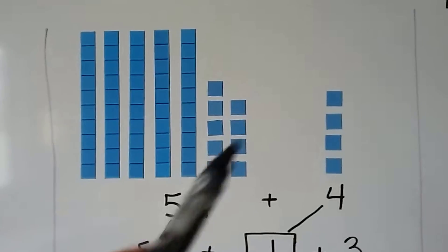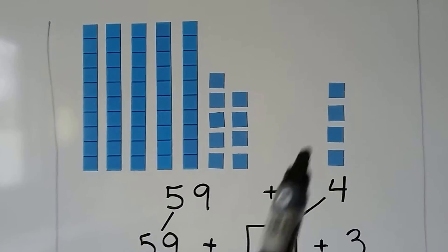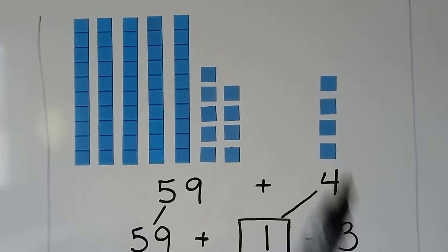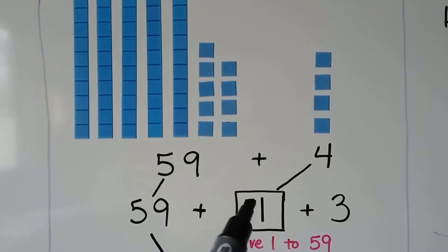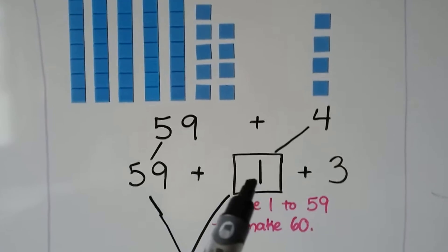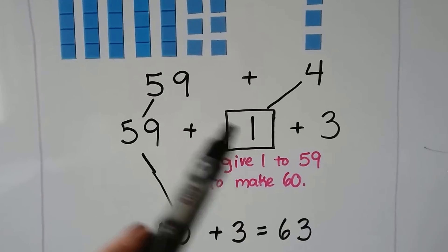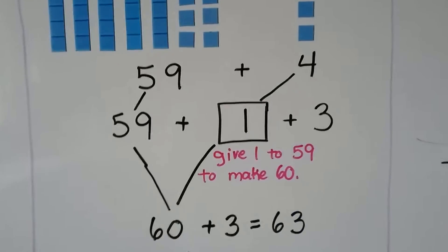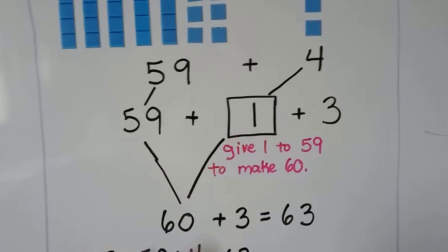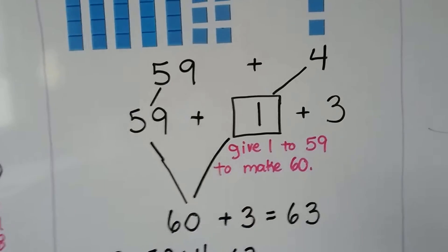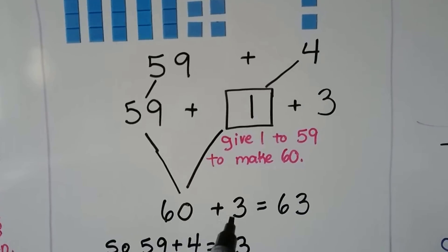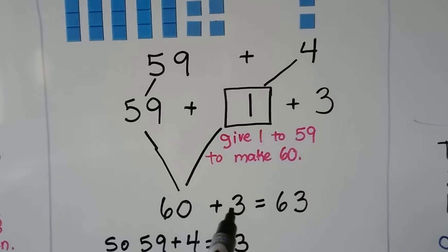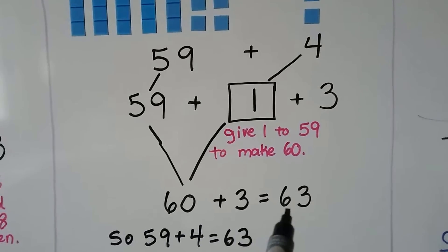Let's try it again. Here we have a group of fifty-nine, and we have a group of four. We want to add them together. We can break this four apart into a one and a three, and give that one to the fifty-nine. If we're at fifty-nine and we count on one — fifty-nine and one more — sixty. We give that one to the fifty-nine and make a sixty, and now we add the three that is left over from the four. We have sixty-three.